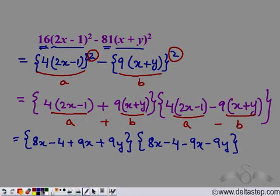Now combine the like terms. Eight x plus nine x is seventeen x. We have 9y here so we write 17x plus 9y minus 4.